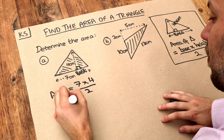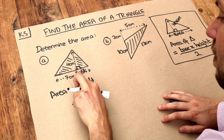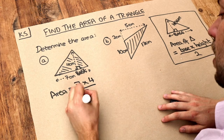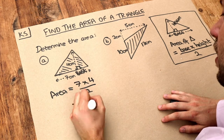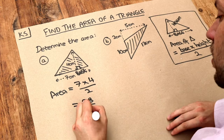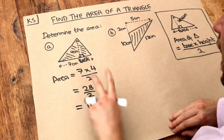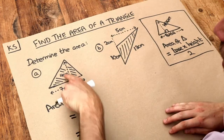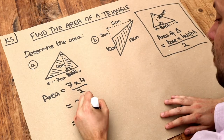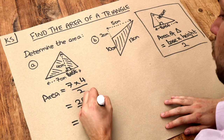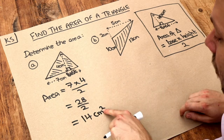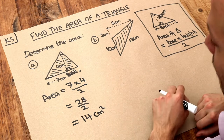And then if we simplify that: 7 times 4 is 28, divide by 2 is equal to 14. And because these are both centimetres, it's going to be centimetres squared. Remember that units of area have a squared on them.